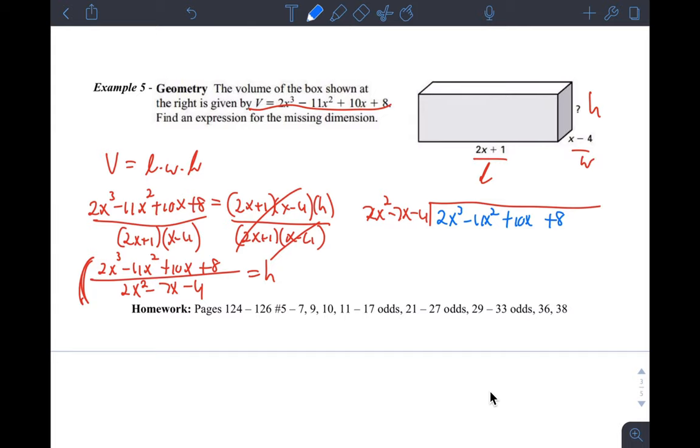And when you do that division, you say 2x cubed divided by 2x squared, you just get x. Multiply that everywhere. So you get 2x cubed minus 7x squared minus 4x. And then subtract that. This becomes negative 4x squared, and then 10x plus 4x becomes plus 14x. Then bring the 8 down.